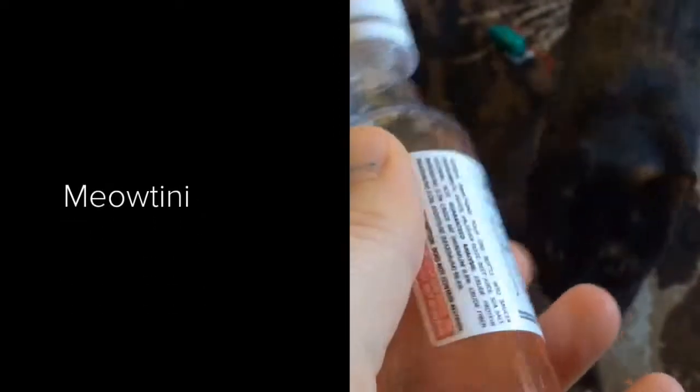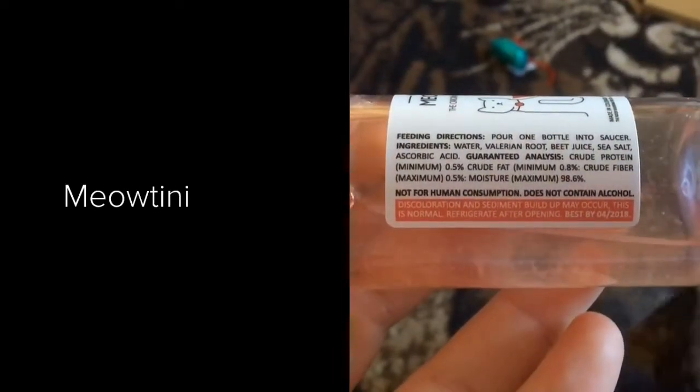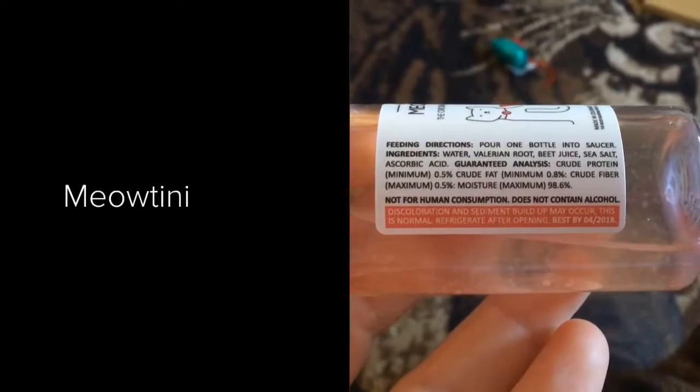Next we have Meowtini, with a bit of Nine in the background there. The ingredients in this one are water, valerian root, beet juice, sea salt, and ascorbic acid.